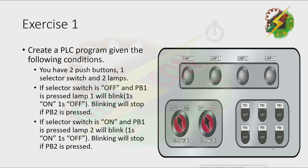Exercise 1. Create a PLC program given the following conditions. You have two push buttons, one selector switch, and two lamps. If the selector switch is off and PB1 is pressed, lamp 1 will blink 1 second on, 1 second off. Blinking will stop if PB2 is pressed. If the selector switch is on and PB1 is pressed, lamp 2 will blink 1 second on, 1 second off. Blinking will stop if PB2 is pressed.